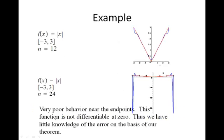In the last example, we're going to look at a function that is not differentiable at zero. The absolute value function is the function that looks like a wedge or a V. And you can see when n is 12, the interpolants are reasonable, but still they're not very good.